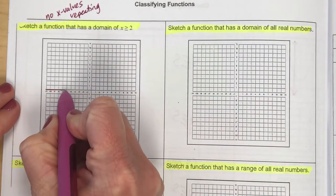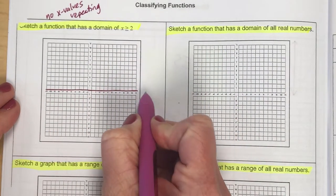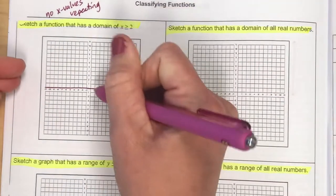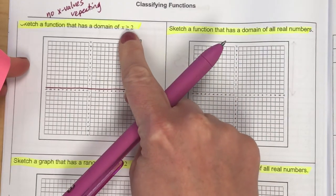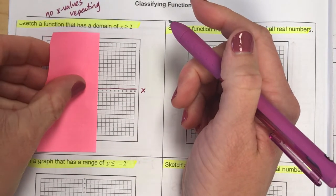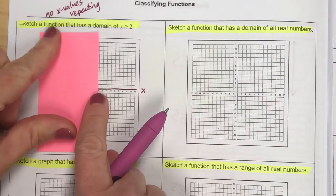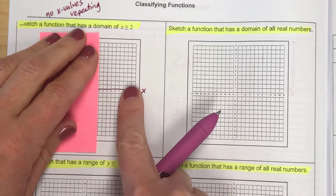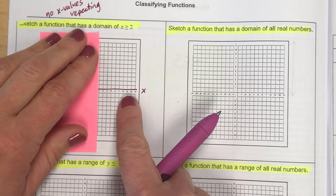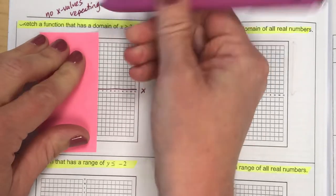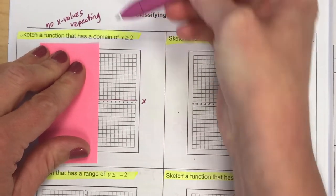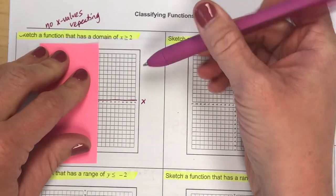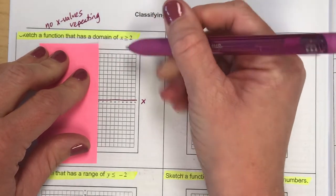Your domain is according to your x-axis, and if I want my x values to be greater than or equal to 2, that means at positive 2 on the x-axis my graph has to be on the right side, because this is where x values would be bigger than or equal to 2. So let's draw a picture that will have no repeating x values and where all input x values are greater than or equal to positive 2.